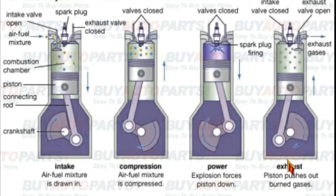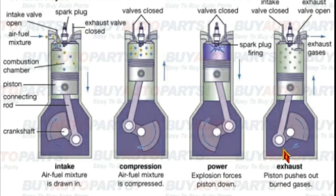Next is the exhaust stroke — the fourth stroke. In the exhaust stroke, the inlet valves are closed and the exhaust valves are open. The piston travels from the bottom dead center to the top dead center, pushing the exhaust gases out through the exhaust valve. This completes the four-stroke cycle.